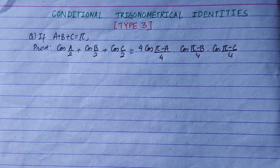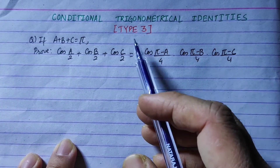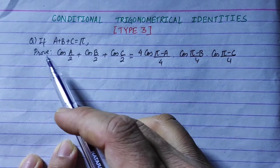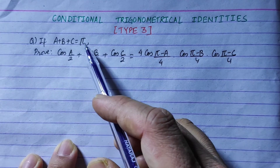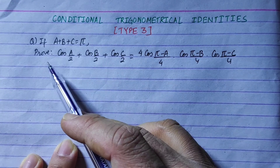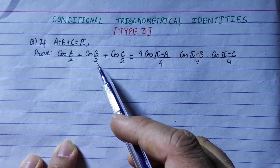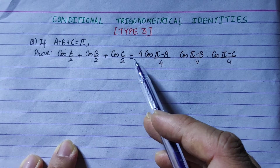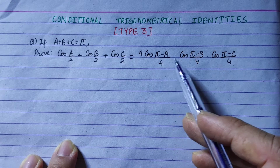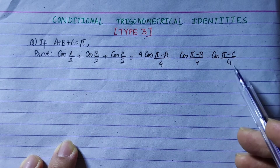Hi everyone. Today I am going to talk about conditional trigonometric identity, third type of question. If a plus b plus c equals pi, prove that cos(a/2) plus cos(b/2) plus cos(c/2) is equal to 4·cos((π-a)/4)·cos((π-b)/4)·cos((π-c)/4).